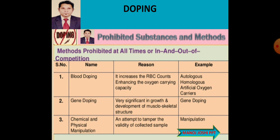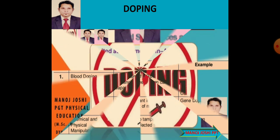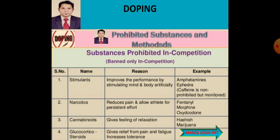Some substances are prohibited only during competition. Stimulants improve performance by stimulating the mind and body artificially — examples are amphetamines and ephedrine. Caffeine is not prohibited but is monitored.